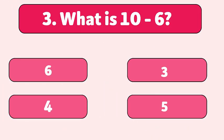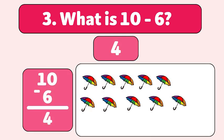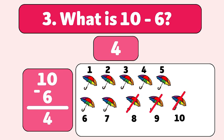What is 10 minus 6? The answer is 4! We start with 10 umbrellas and take away 6. Let's count! 1, 2, 3, 4, 5, 6. We have 4 umbrellas left!